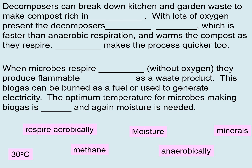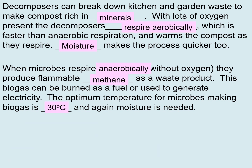Write down these key notes: decomposers can break down kitchen and garden waste to make compost rich in minerals. With lots of oxygen present, decomposers respire aerobically, which is faster than anaerobic respiration and warms the compost as they respire — moisture makes the process quicker too. When microbes respire anaerobically they produce flammable methane as a waste product. This biogas can be burned as a fuel or used to generate electricity. The optimum temperature for microbes making biogas is 30 degrees Celsius, and moisture is also needed.